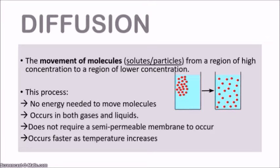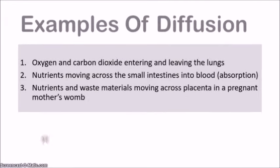Although diffusion commonly occurs across a semipermeable membrane in the body — because cells have a semipermeable cell membrane — it is not absolutely necessary for diffusion to occur in general. The example of molecules diffusing in a liquid in a beaker involves no semipermeable membrane. Finally, diffusion occurs faster as temperature increases. When temperature rises, molecules become more active and collide more frequently, speeding up the rate at which they spread out.